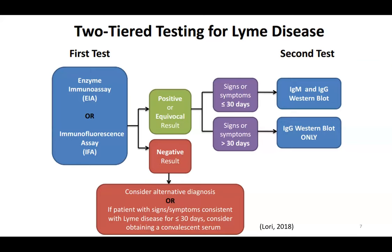Currently, the most commonly used method to detect Lyme disease is a blood test. There are two types of blood tests typically used: ELISA and Western blot. ELISA is the first test used to detect antibodies to Borrelia. If ELISA is positive, a Western blot test is performed to confirm the diagnosis. These blood tests are the most commonly used method for detecting Borrelia infection and can detect the infection even if there are no symptoms, but they are only able to detect infection two to four weeks after initial infection.